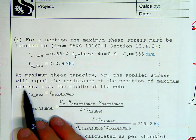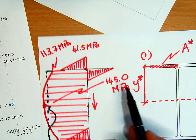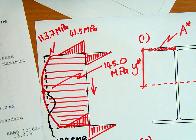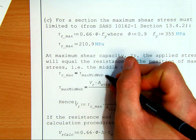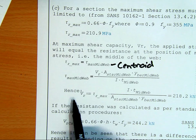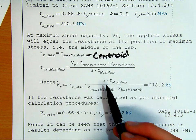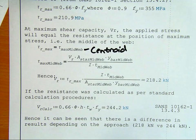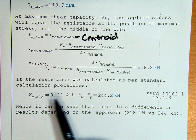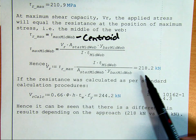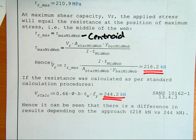Now, at maximum shear capacity VR, the applied stress will equal the resistance at the position of maximum stress, i.e. at the middle. So, how much can we increase this stress until it hits the 210.9 MPa stress we've calculated? And so, if I set my maximum stress equal to my maximum stress at the web, at the centroid, so this is just at the centroid, we set those equal to each other and then we find a term for shear resistance. This is now our maximum shear stress times i times t. If we run through all those calcs, we'll find our total force we can apply is 218.2 kN. So, that gives us a total capacity. If the resistance was calculated as per standard calculations, however, it would just be this slightly simpler equation, we get 244. So, depending if we've done a rational calc, limiting stresses, or just an average calc, we'll get a slightly different result, which is fine, it's acceptable.